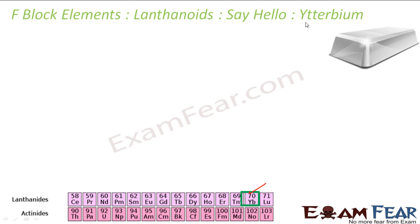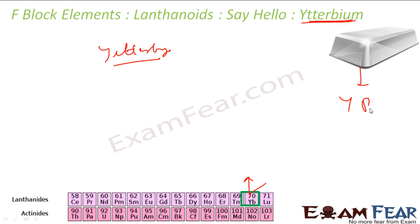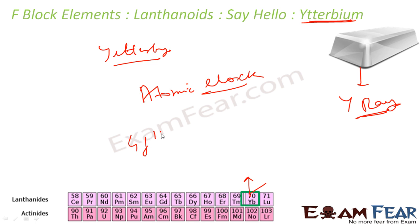Ytterbium is a soft, white, malleable, and ductile metal — the second-to-last element of the lanthanide series. It is also named after the village of Ytterby in Sweden. It is a source of gamma rays and is used for making atomic clocks; in fact, the most stable atomic clock in the world is made using ytterbium. Its electronic configuration is 4f¹⁴ 6s².